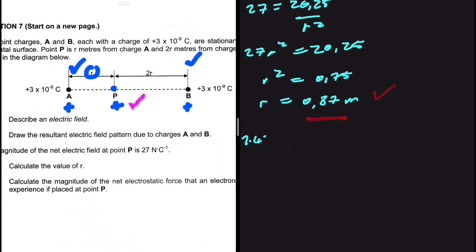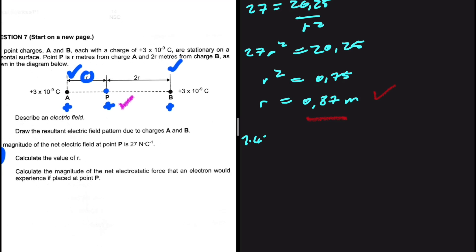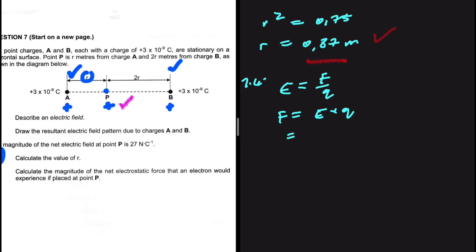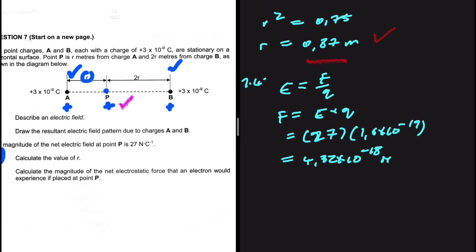7.4: calculate the magnitude of the net electrostatic force that an electron will experience if placed at P. We know E = F / Q, so F = E × Q. The net electric field is 27, and Q is the charge of an electron: 1.6×10⁻¹⁹ C. That gives F = 27 × 1.6×10⁻¹⁹ = 4.32×10⁻¹⁸ newtons.